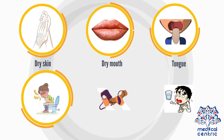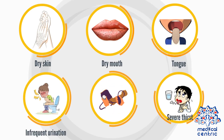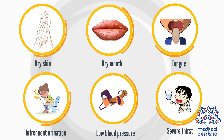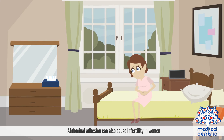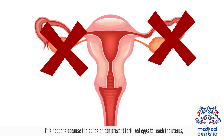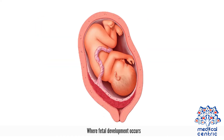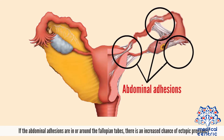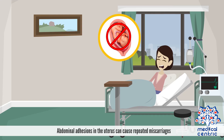Dehydration symptoms including dry skin, dry mouth and tongue, infrequent urination, low blood pressure, or severe thirst may also occur. Abdominal adhesion can also cause infertility in women, because the adhesion can prevent fertilized eggs from reaching the uterus, where fetal development occurs. If the abdominal adhesions are in or around the fallopian tubes, there is an increased chance of ectopic pregnancy. Abdominal adhesions in the uterus can also cause repeated miscarriages.